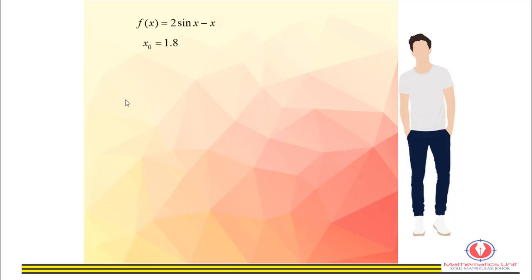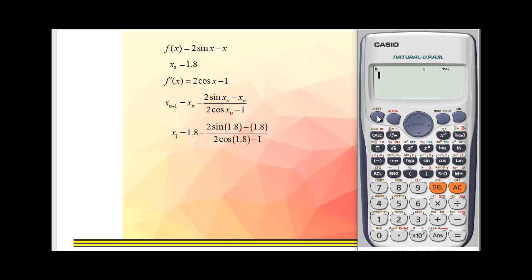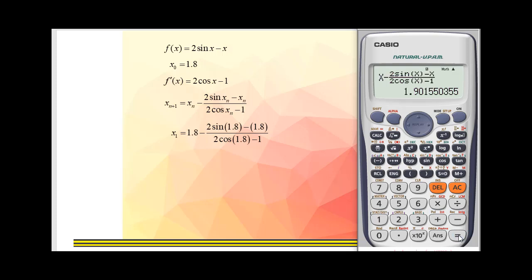We can choose any value on the interval as the first approximation; I chose 1.8 as the initial value. f prime(x) = 2cos(x) minus 1, so the iteration formula is: x sub (n+1) = x sub n minus (2sin(x sub n) minus x sub n) over (2cos(x sub n) minus 1). So x sub 1 = 1.8 minus (2sin(1.8) minus 1.8) over (2cos(1.8) minus 1). Enter the function into the calculator — make sure it is in radian mode when solving equations involving trigonometry. The answer for x sub 2 is 1.9016, rounded to four decimal places.